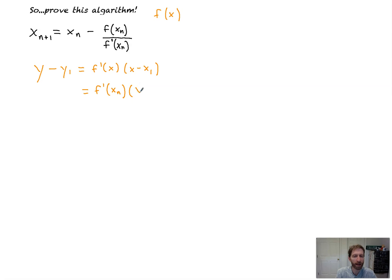All right, well, this would be x minus x sub n. y sub 1 would be f of x sub n. And this would just be your y value. But here's the thing.